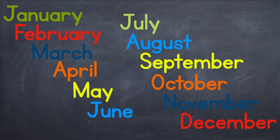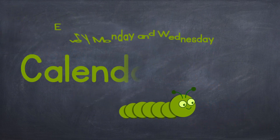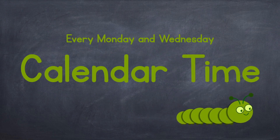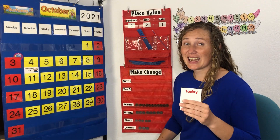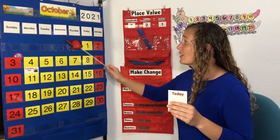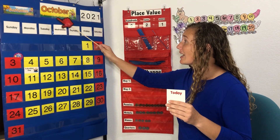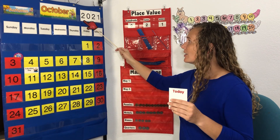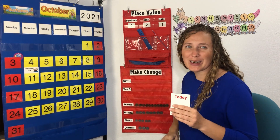Go check the calendar and you can say what month it is and the day. It's calendar time! Today is Wednesday, October 27th, 2021.